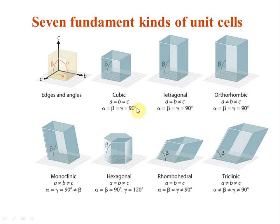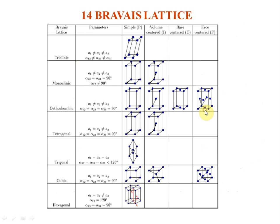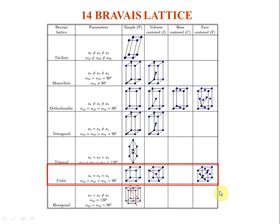From the seven fundamental kinds, by placing atoms at different positions you get 14 Bravais lattices. In each of the seven types you can have atoms only at corners (primitive). You can also place an atom in the center of the body — four of the seven systems support this (trigonal, triclinic, and hexagonal do not). You can also have base-centered or face-centered variants. For our purposes the three cubic ones — simple cubic, body-centered cubic, and face-centered cubic — are the most important.